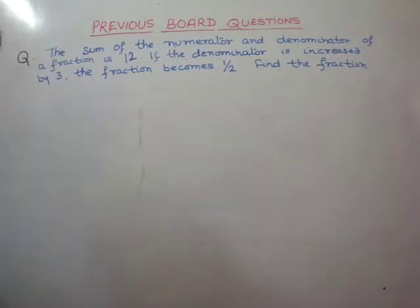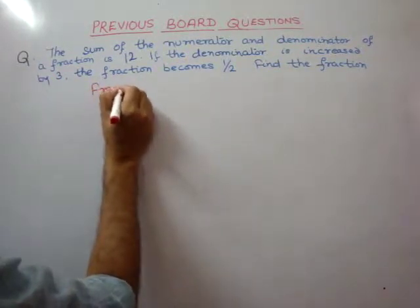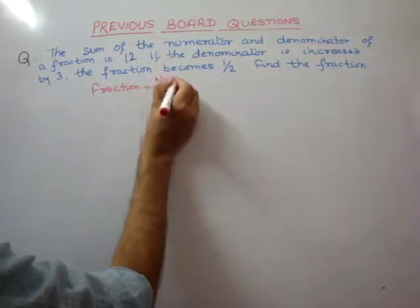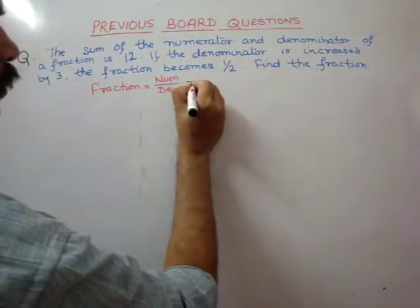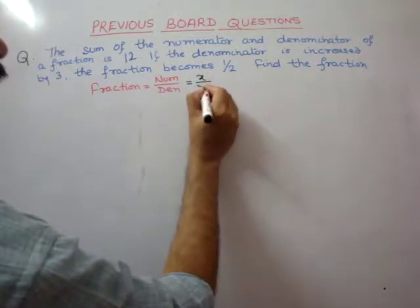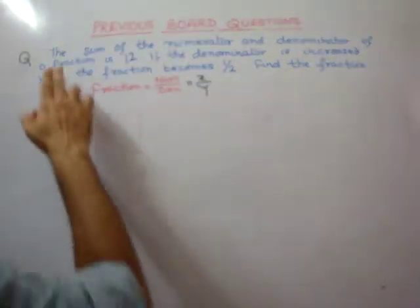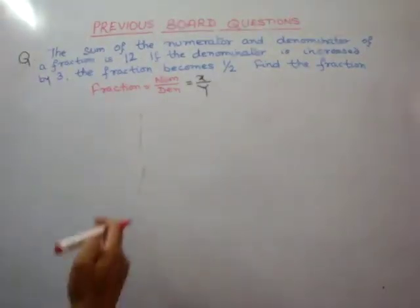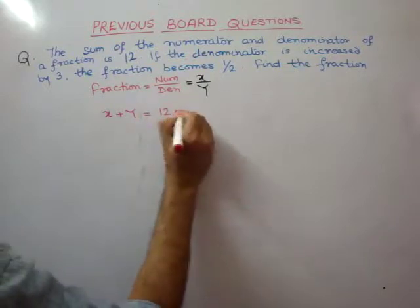Fraction is equal to numerator by denominator. Numerator humnay liya x, and denominator humnay liya y. Is nai kya kaha? The sum of the numerator and denominator of a fraction is 12. That means x plus y is equal to 12 — first equation.